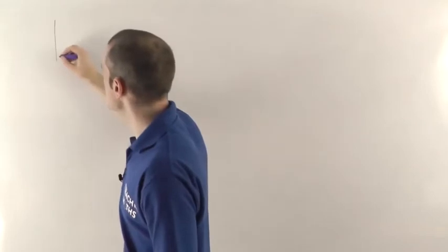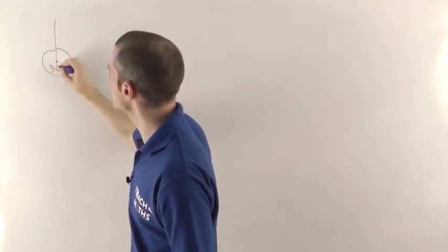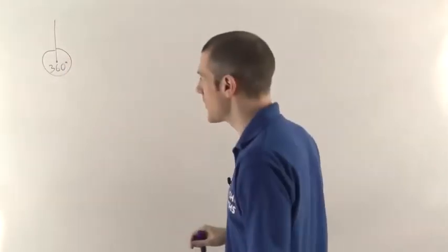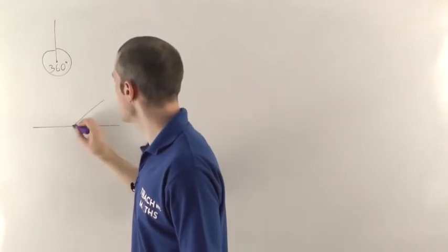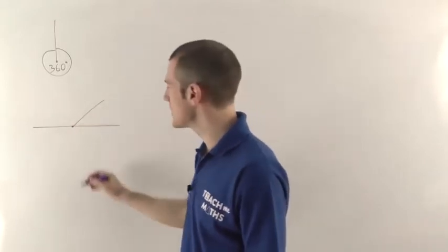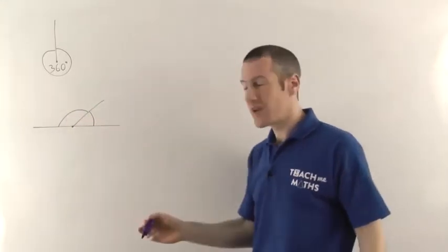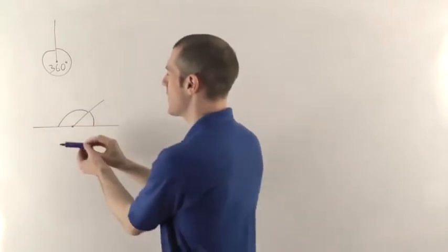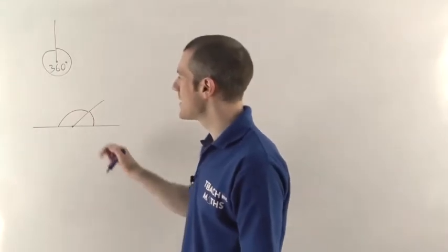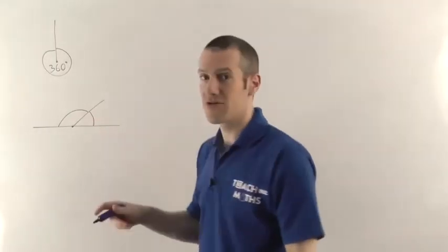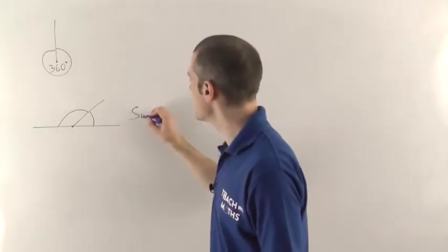Just very quickly then: angles in a full circle add up to 360 degrees — that's the first fact you should be aware of. Next, angles on a straight line. If you have a straight line and another line that meets it at a point, then these two angles are going to add up to 180 degrees. An angle on a straight line — halfway around the circle — adds up to 180 degrees. If you have two angles that add up to 180 degrees, sometimes we say that they're supplementary.